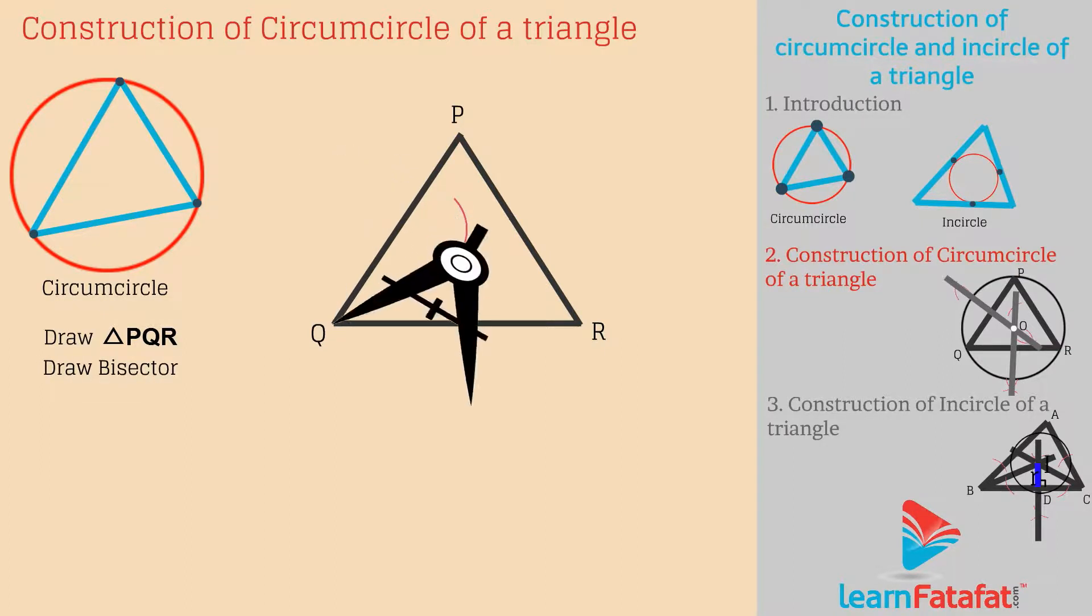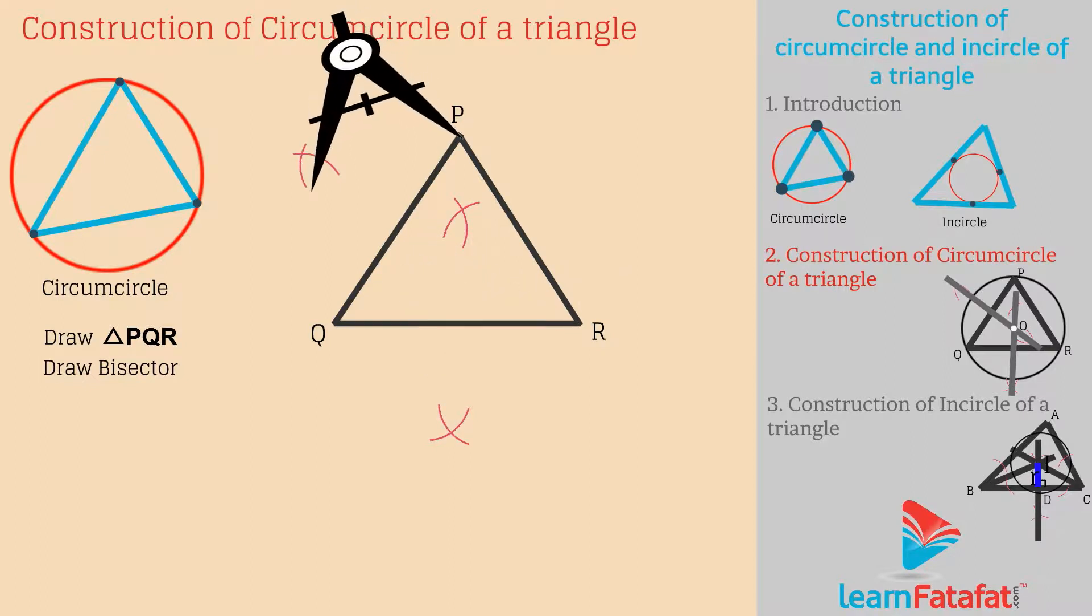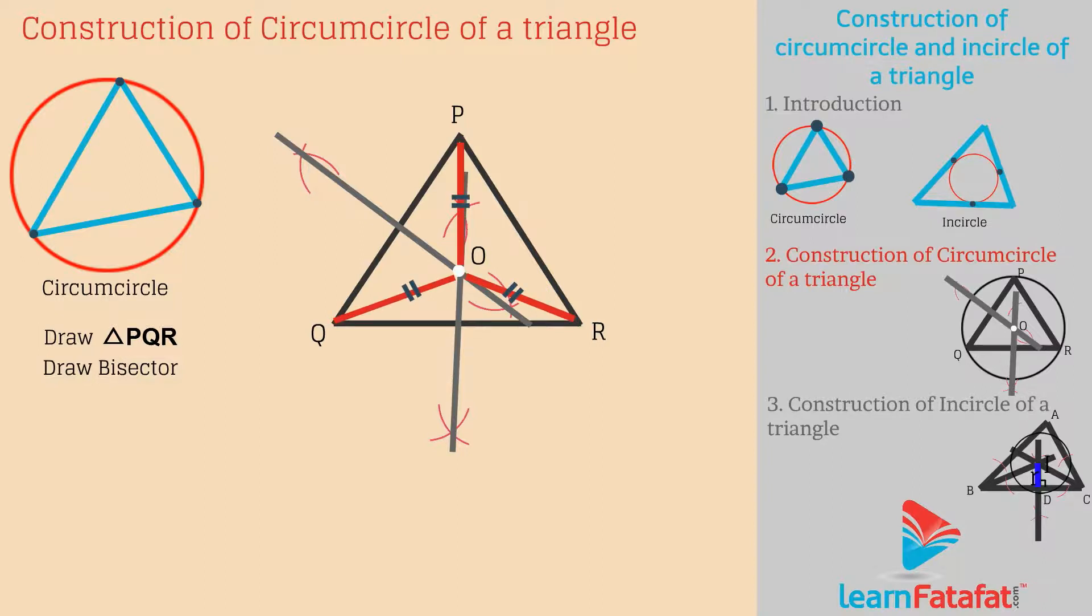Draw perpendicular bisector of any two sides. Let the perpendicular bisectors intersect at point O. Point O is equidistant from points P, Q and R.